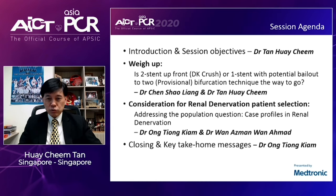Specifically, they will address the population question and case profiles of patients most ideally suited for renal denervation. Dr. Ong Tiong Kiam will close the entire session with some key take-home messages. To start, I'm going to invite Dr. Shao Liang Chen from China to give his talk on whether two stents upfront is the way to go. Dr. Chen.